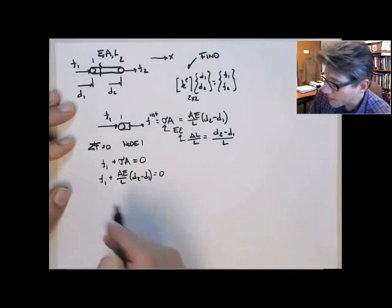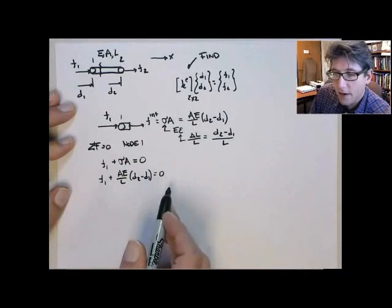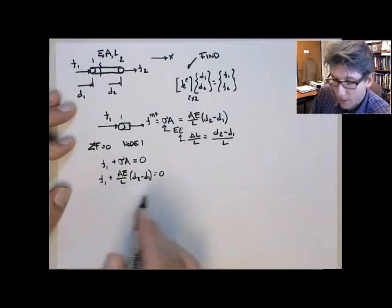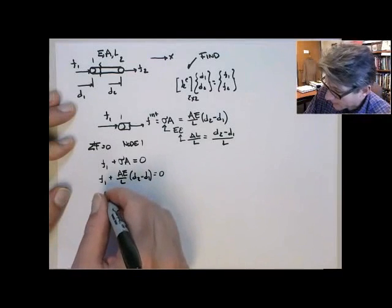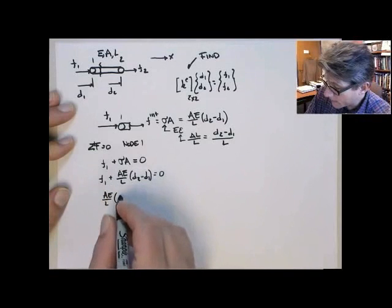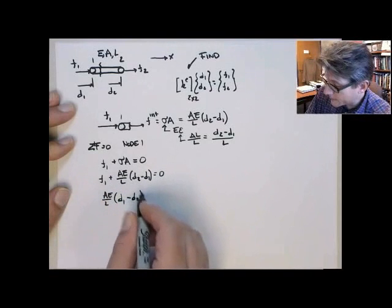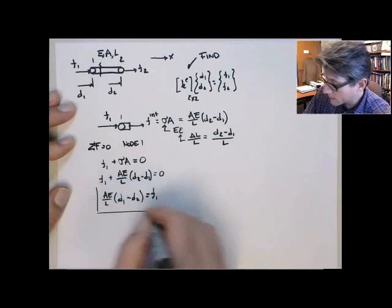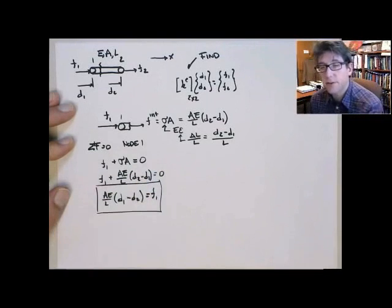Now we can do some manipulation. We'll move f1 to the right-hand side and then multiply by minus 1 so f1 stays positive. We get EA over L times d1 minus d2 equals f1.